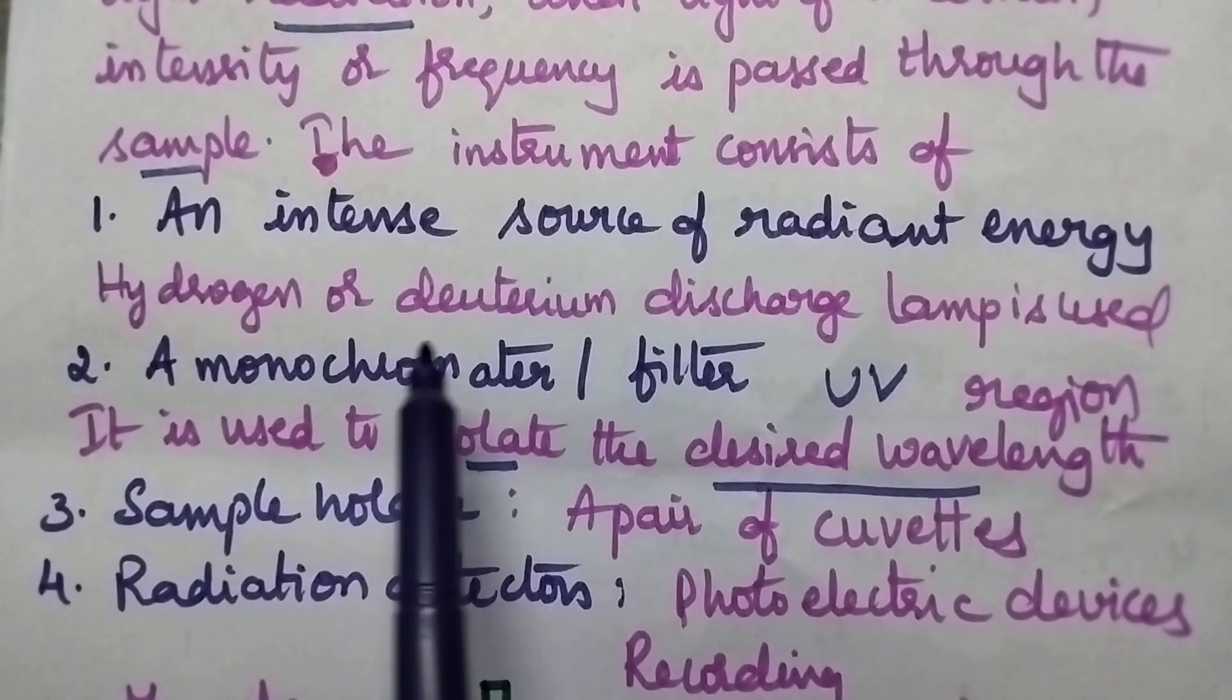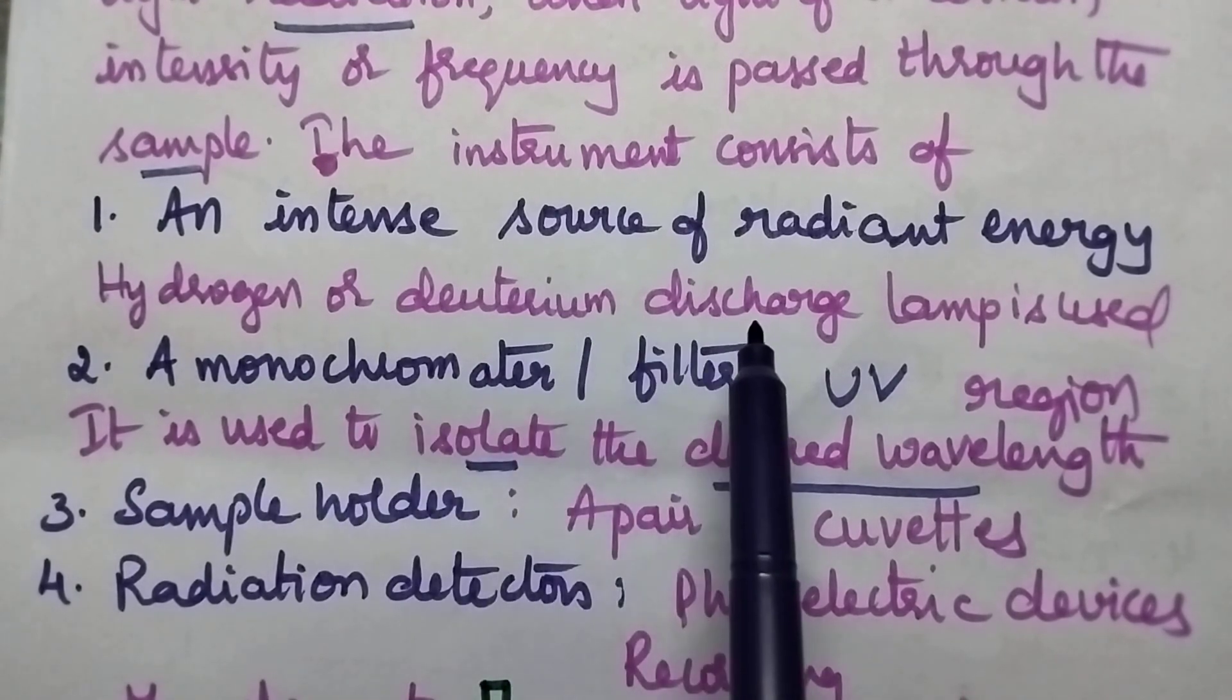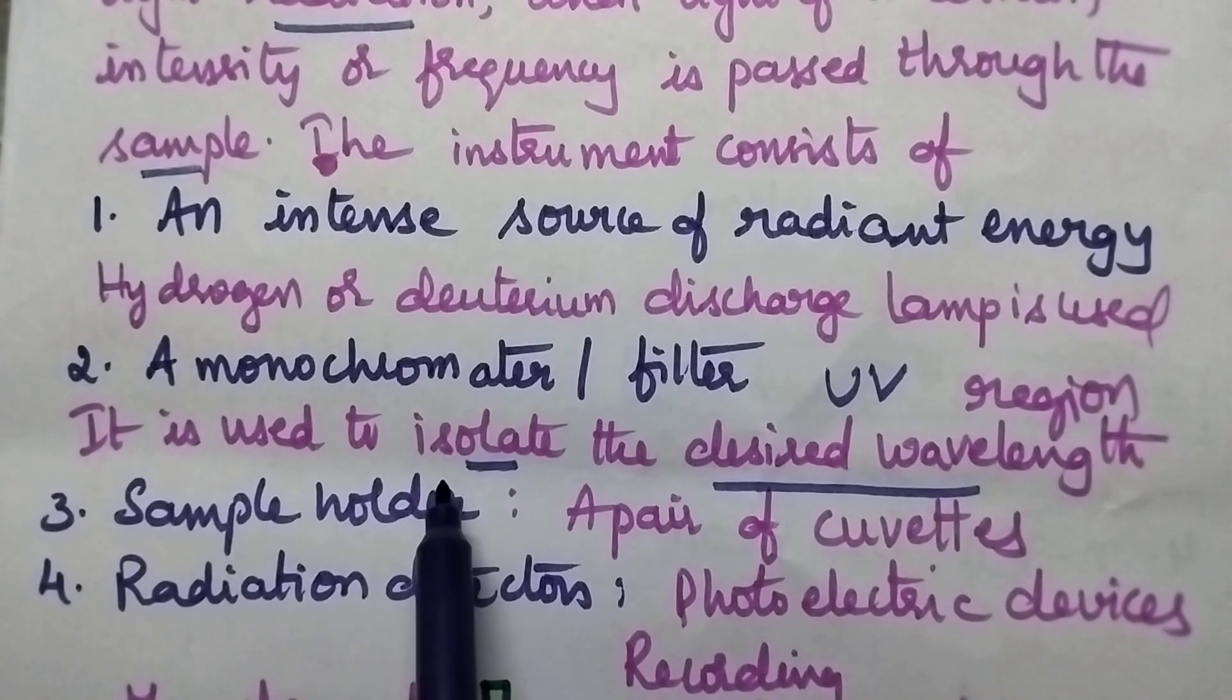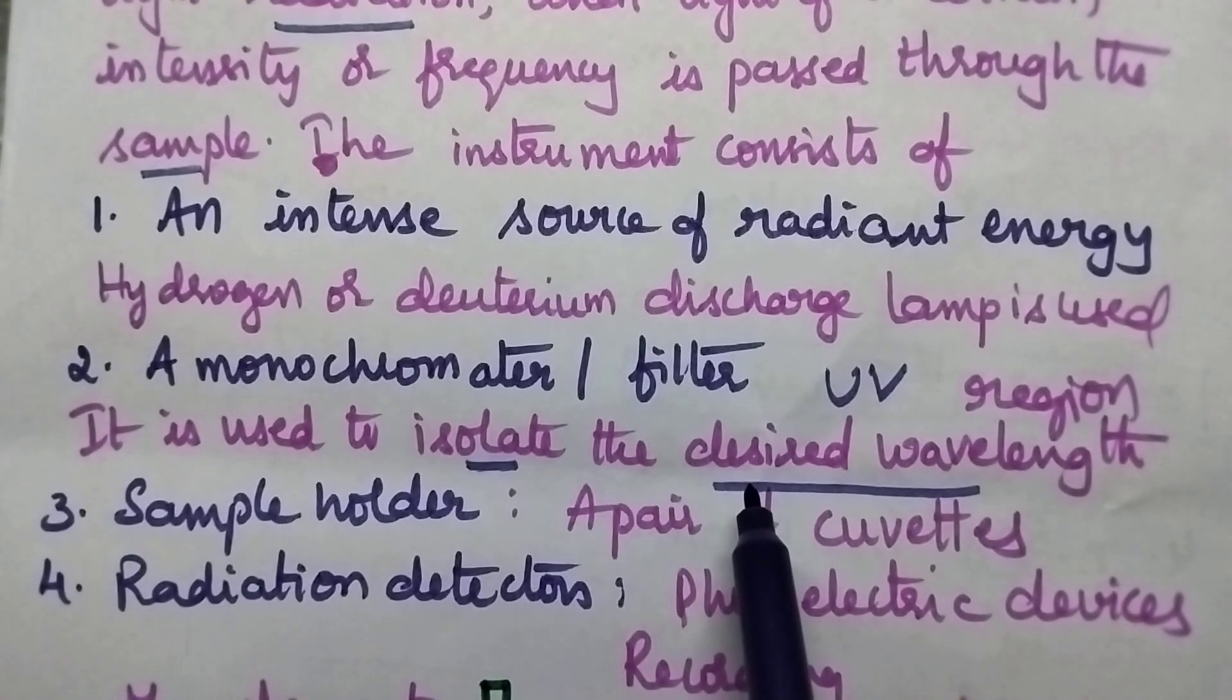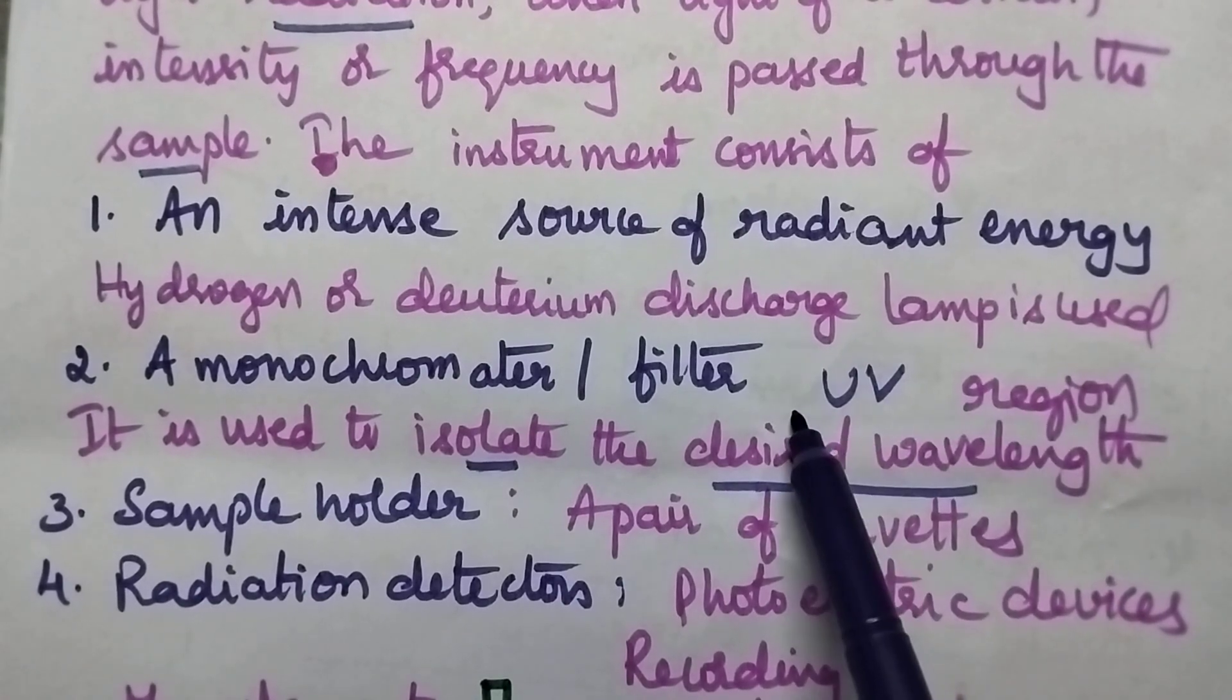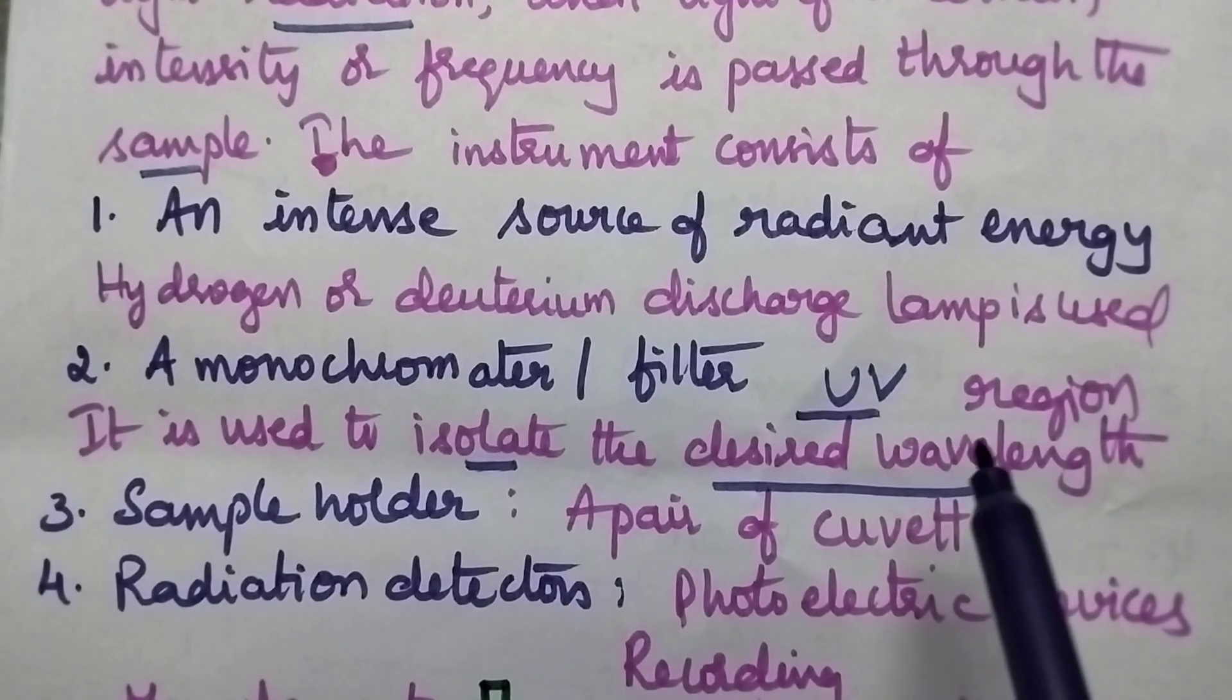Hydrogen or deuterium lamp is used as the light source. Monochromator is highly useful to isolate the light radiations of desired wavelength. We have to get the UV radiations.